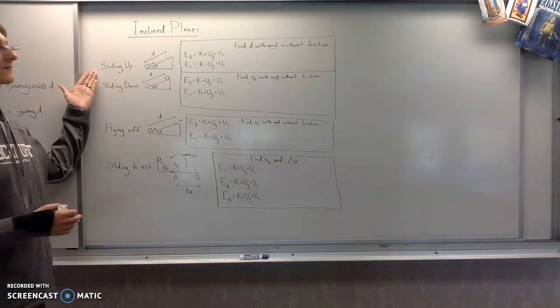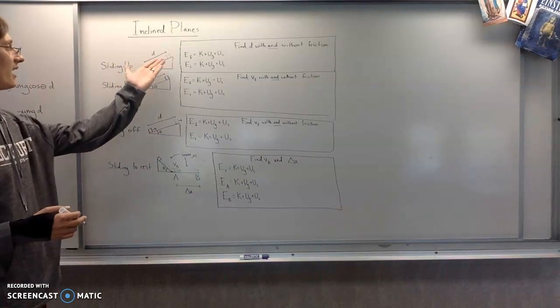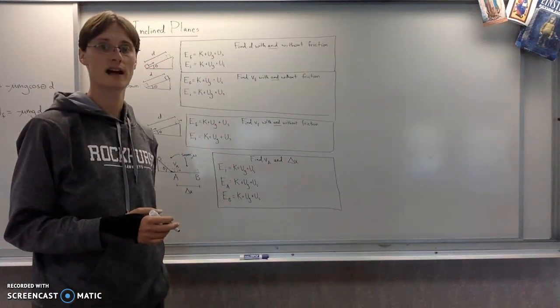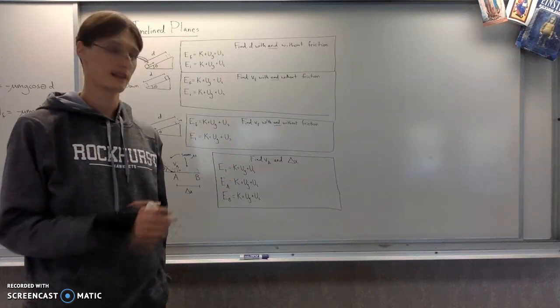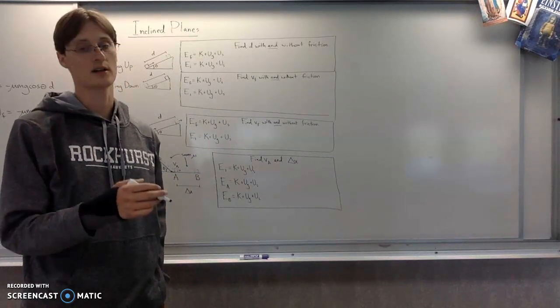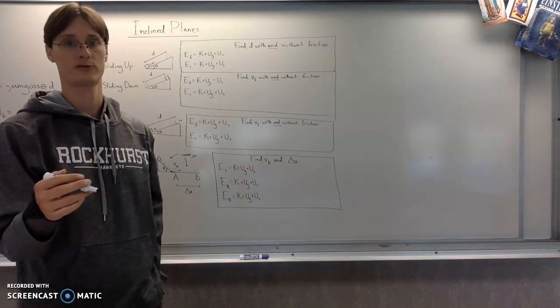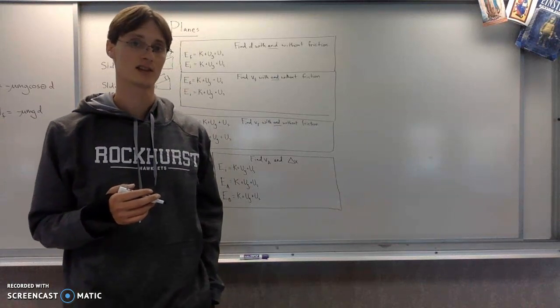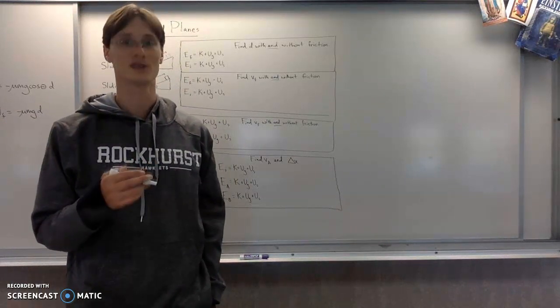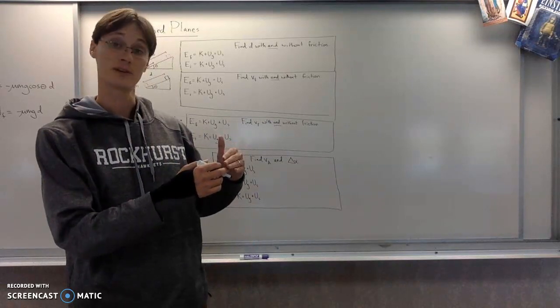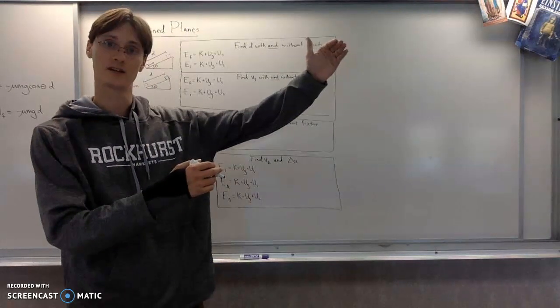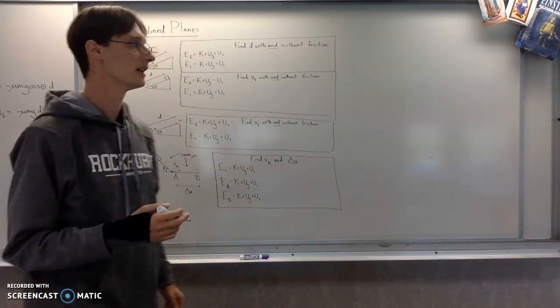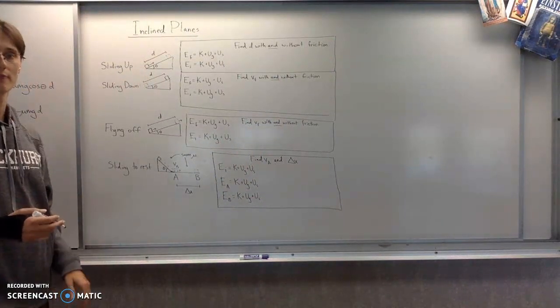All right, so first case is an object is sliding up an incline, and you are supposed to find the distance that it travels. Usually the way this would be done is without friction first, and then with friction. Often the way that it's done is actually supposed to be in order to let you know whether or not you screw it up, because obviously if you get without friction, it slides five meters. With friction, it had better be less than that.